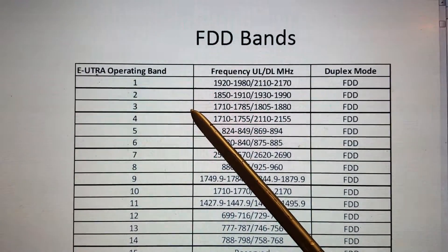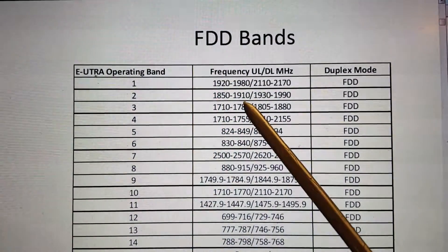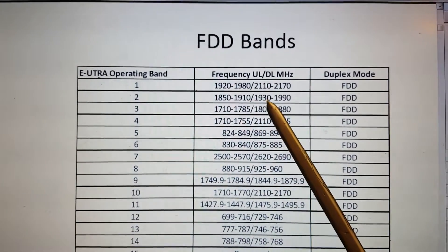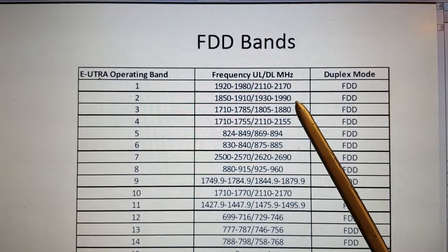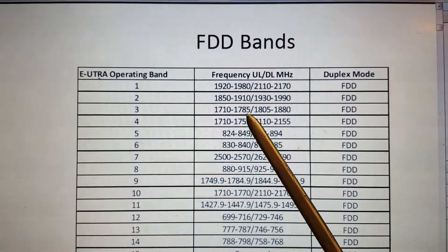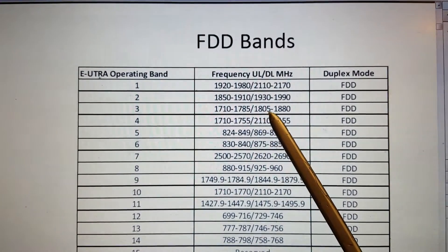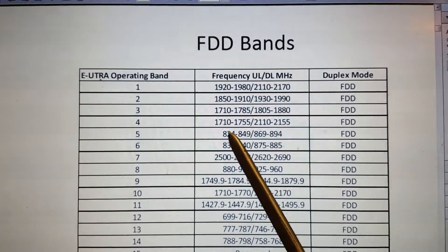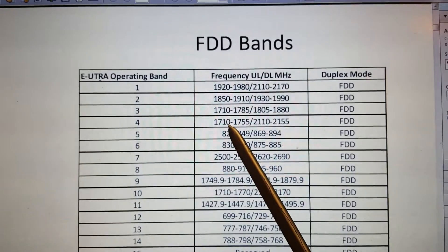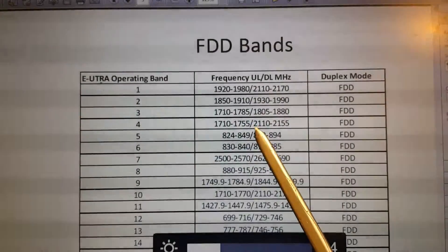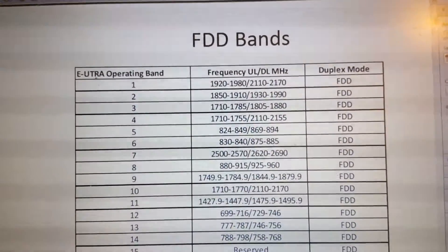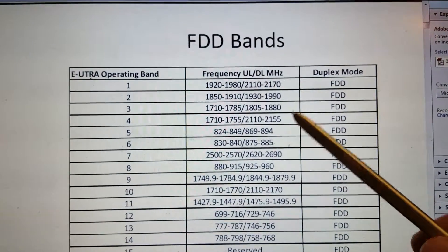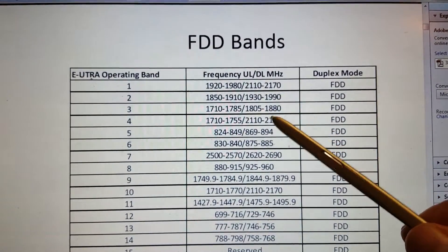The second available band starts from 1850 to 1910 and 1930 to 1990. The third one is 1710 to 1785 and 1805 to 1880. The fourth one is 1710 to 1755 and 2110 to 2155.